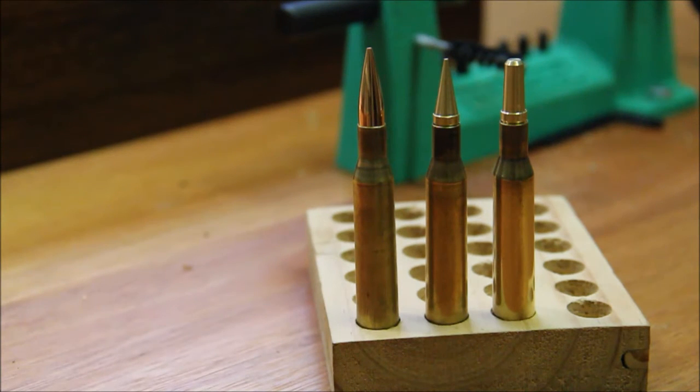The two bullets of interest for today are the one in the middle and the one to the right. The one in the middle is a 100 grain monolithic bullet and the one on the right is a 120 grain monolithic bullet as well.